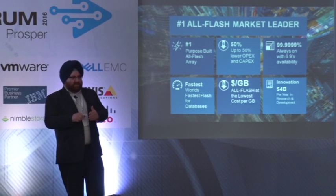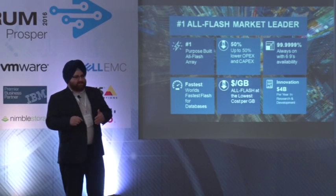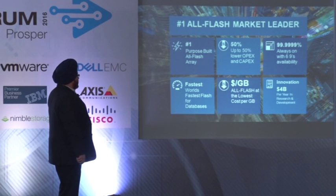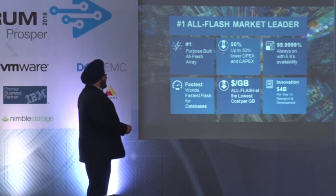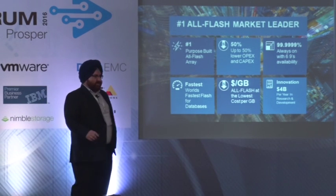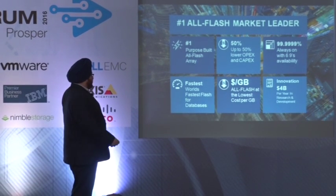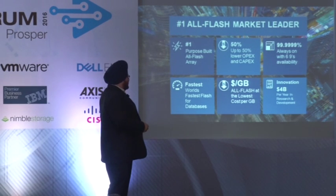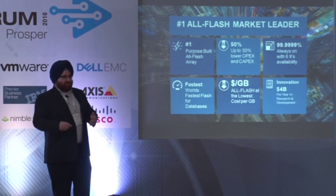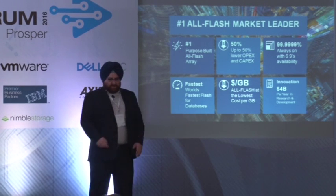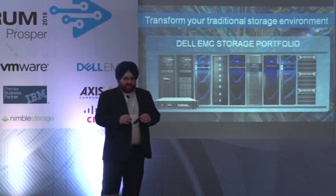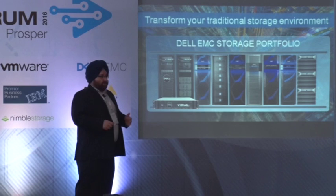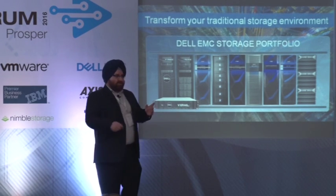We have the number one all-flash position in the market. If you look at Gartner's Magic Quadrant or IDC numbers, Dell EMC is the number one selling all-flash storage in the market — number one purpose-built all-flash array. Based on our data reduction capabilities, we can give you up to 50% lower OPEX and CAPEX. All of our storages are guaranteed for six-nines availability. We have some of the world records in the fastest storage for databases, and the lowest cost per gigabyte for all-flash devices. Dell EMC also invests a lot of revenue back into R&D so we can give you better equipment and software year after year. In a nutshell, we transform your traditional storage environment by giving you a complete storage portfolio — Dell EMC always has a storage portfolio, not one product with various items.